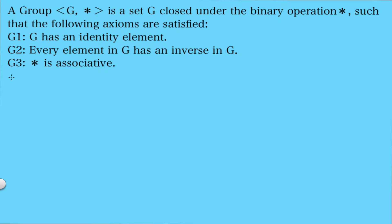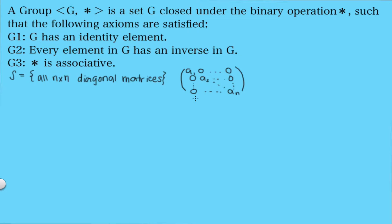The next example involves matrices. I'm going to define the set S to be the set of all n by n diagonal matrices. A diagonal matrix is a matrix where the only non-zero elements are the ones lying on the diagonal. Now I want to look at S with matrix multiplication and ask whether this structure is a group.